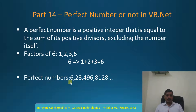A few of the perfect numbers are 6, 28, 496, and 8128. We are going to discuss two approaches in this program: one is using a for loop, and the second one using a while loop.